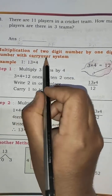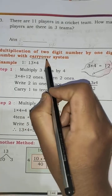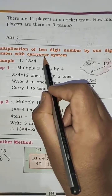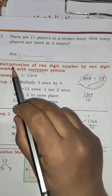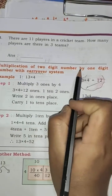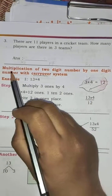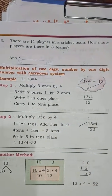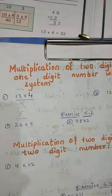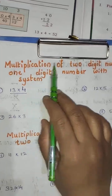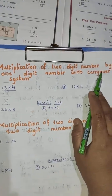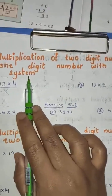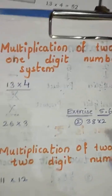This carryover is familiar to you, because you have done it in the case of addition — carryover. So multiplication of two-digit number by one-digit number with carryover system. Let us take one example first.